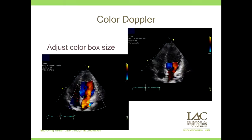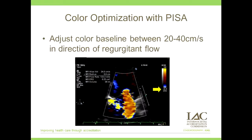Adjusting the color box size is also important — keep the box relatively small and focus over the valve you're interrogating. Color optimization with PISA is extremely important and makes a huge difference in our PISA calculation. Adjust your color gain, then zoom in on this area, adjust the baseline down between 20 and 40 in the direction of the regurgitant flow. For mitral regurgitation, push the baseline down and adjust between 20 to 40 until you've optimized the radius. When making your measurement, don't go below the valve level — you can use color subtract to tell exactly where you are, then measure out to that outer yellow rim.